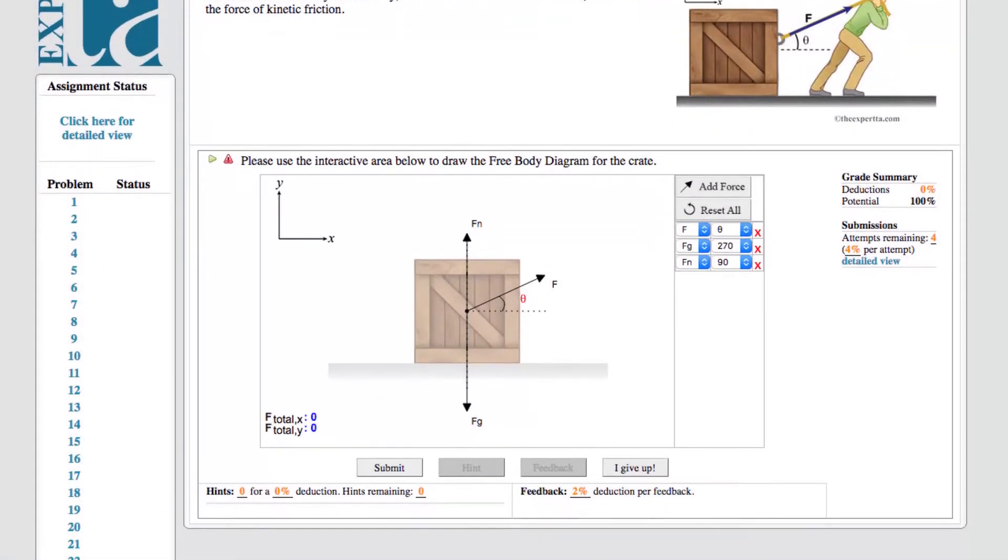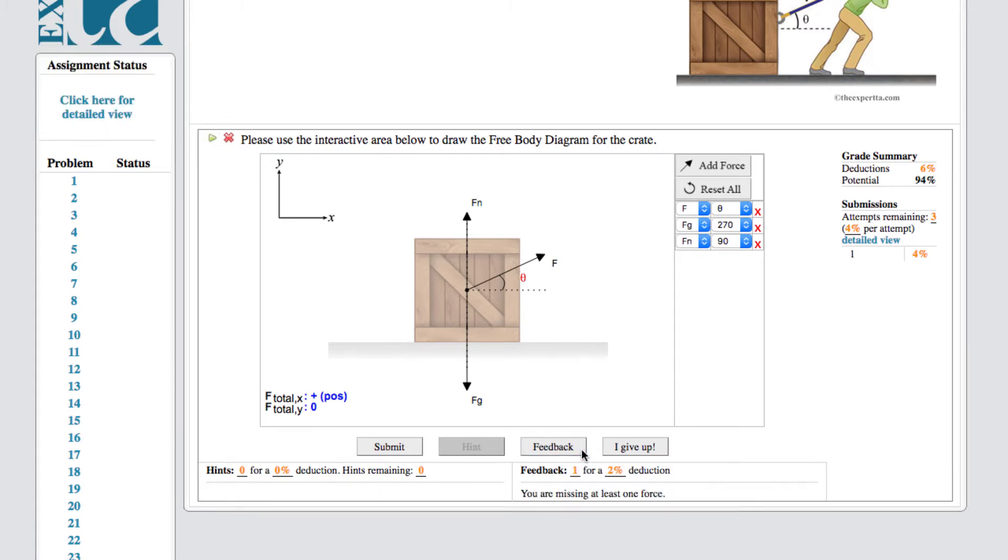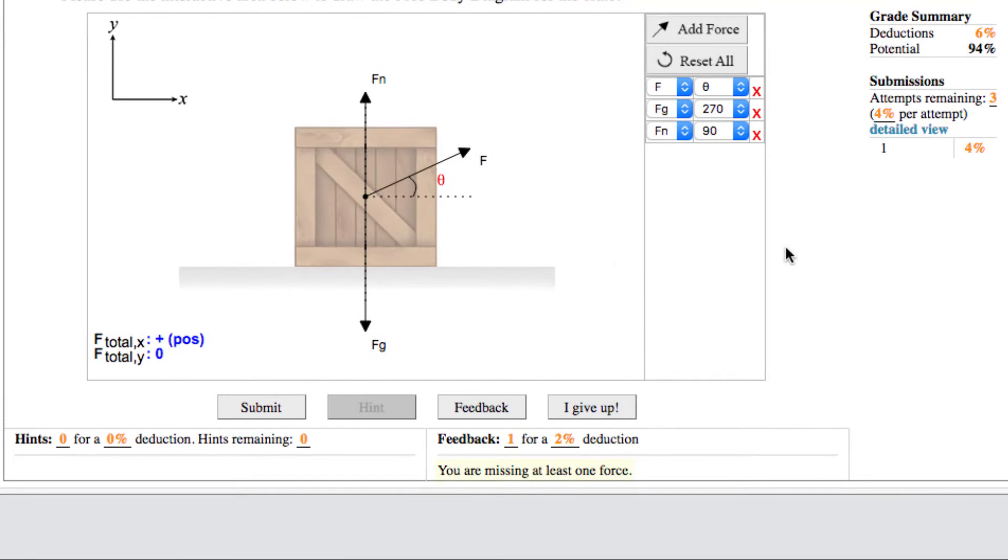Just as with all problems in Expert TA, feedback is available for students as they work. Our assessment engine is able to intelligently detect errors in their free body diagrams as well. Examples of errors include drawings that are missing forces or those where unnecessary forces are drawn.